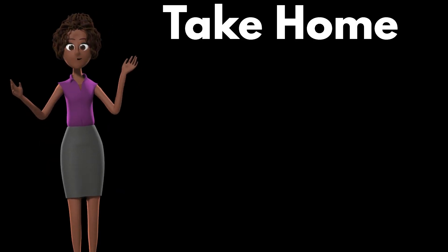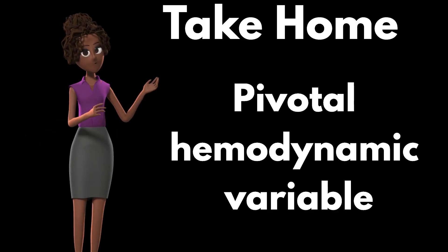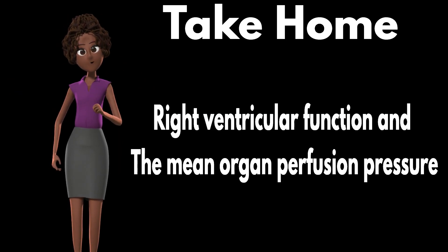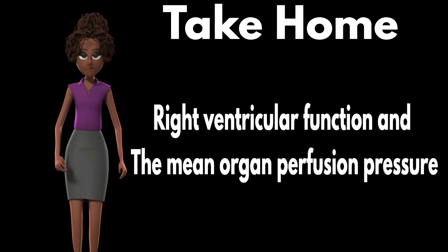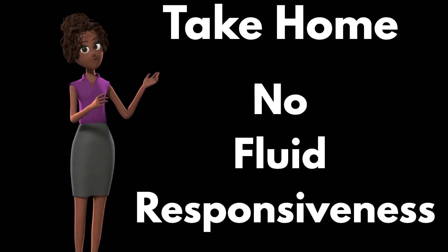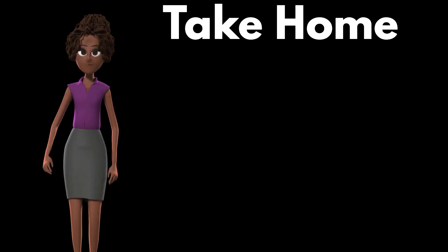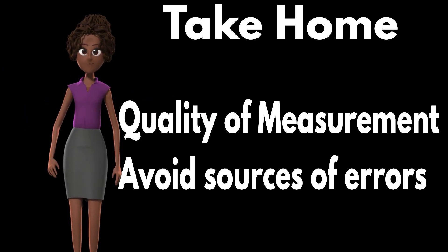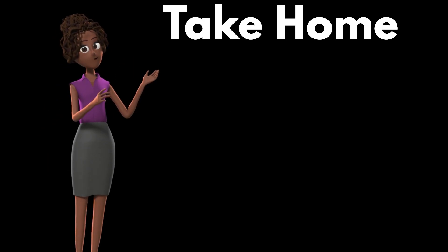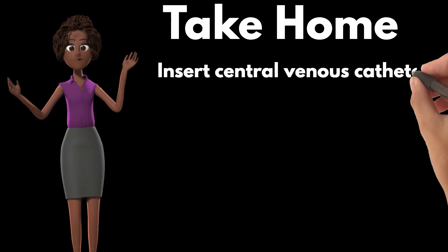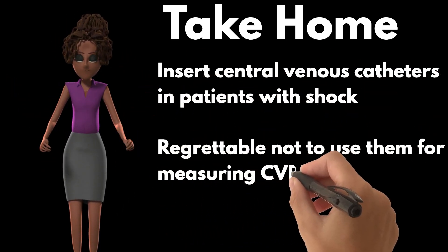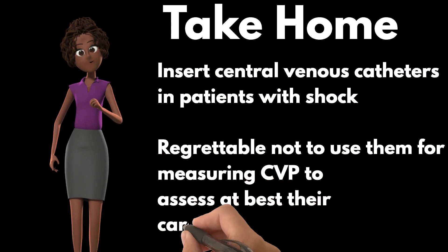The take-home message is: central venous pressure is a pivotal hemodynamic variable, since it provides important information on the right ventricular function and on the mean organ perfusion pressure. CVP cannot be used to predict fluid responsiveness. A prerequisite for correctly interpreting CVP is the quality of its measurement, as many sources of errors may exist. As it is recommended to insert central venous catheters in patients with shock, it would be regrettable not to use them for measuring CVP to assess their cardiovascular status.